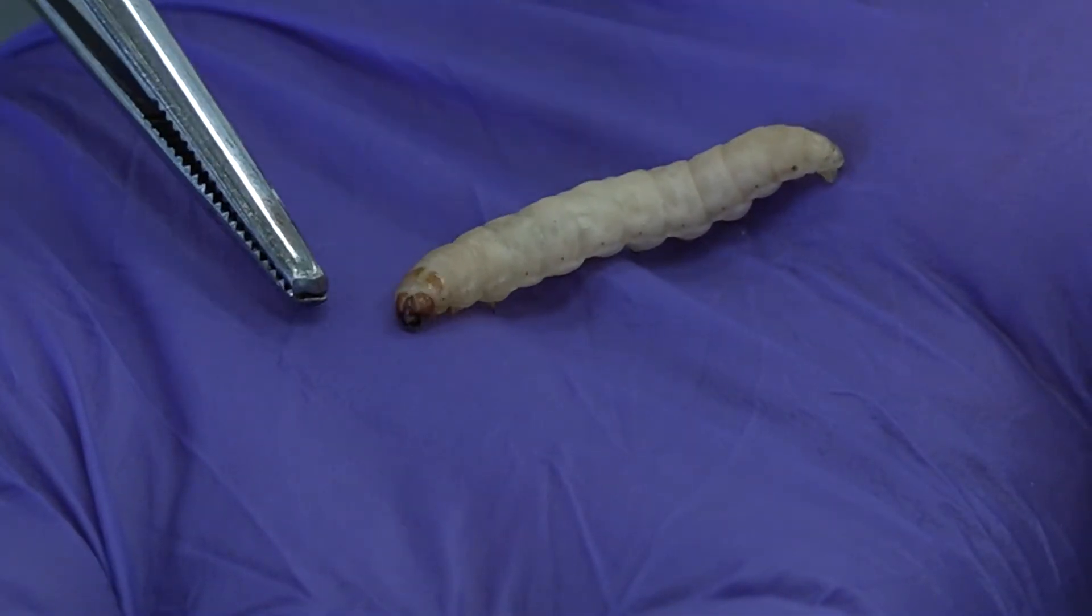Larvae have a head end and a tail end and we inject into a proleg.